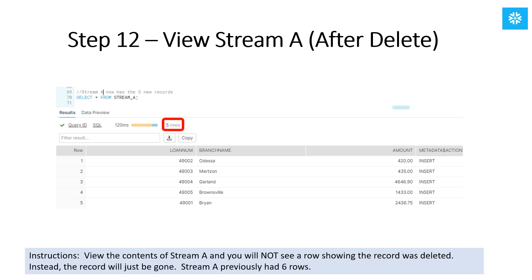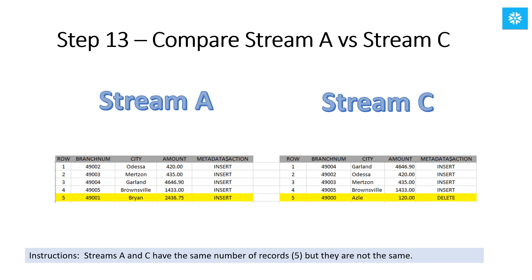Also, even though stream A and stream C both have five entries, they are not the same five entries. Stream A has five entries, all of them insertions. Stream C has five entries, which includes four insertions and one deletion. The reason for the difference is because stream A was created before the record for branch 49001 was inserted, while stream C was created after the record was inserted in the table.